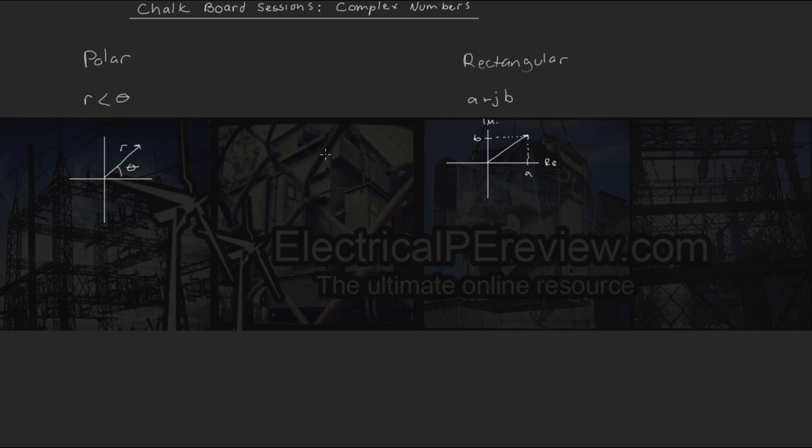Now we can relate these two if they are the same vector, since they can be expressed in either polar or rectangular. So let's draw a triangle and see how they relate. We'll say this is a right triangle, magnitude r, with a real component a, imaginary component b, at an angle of theta.